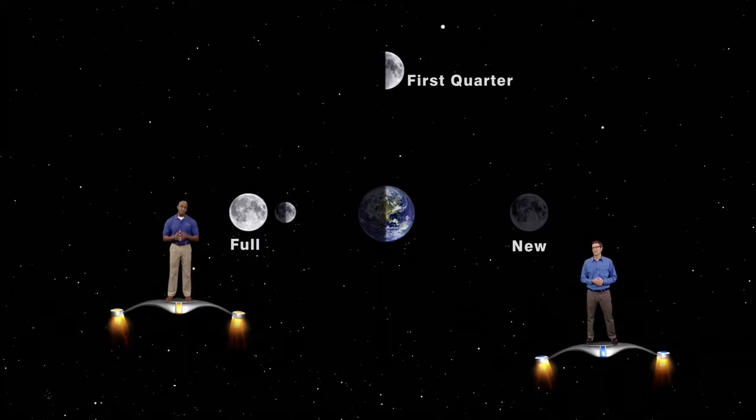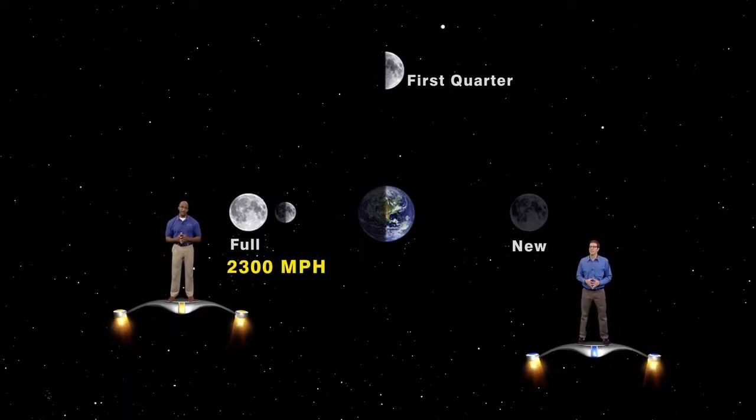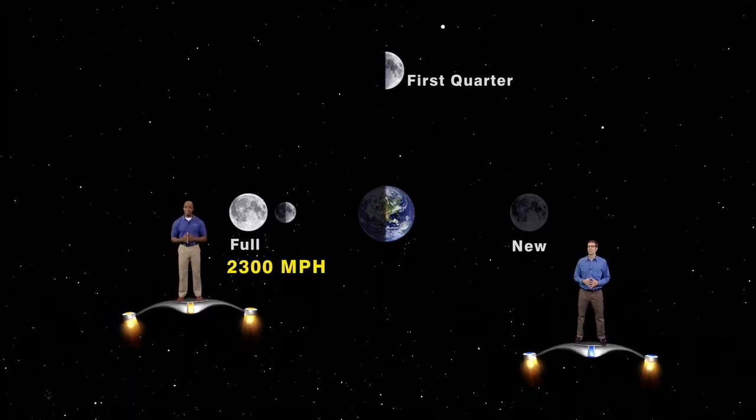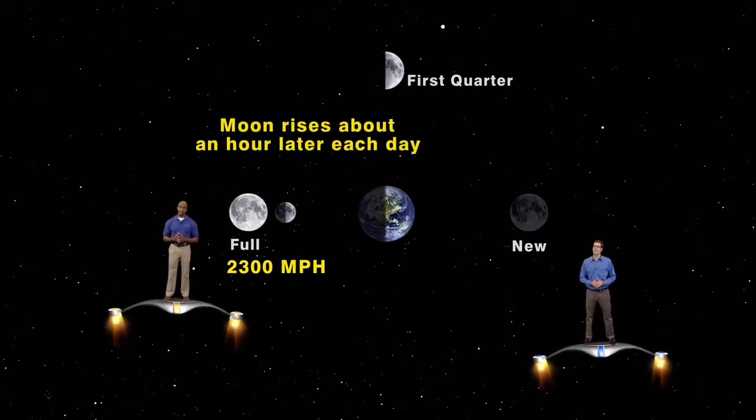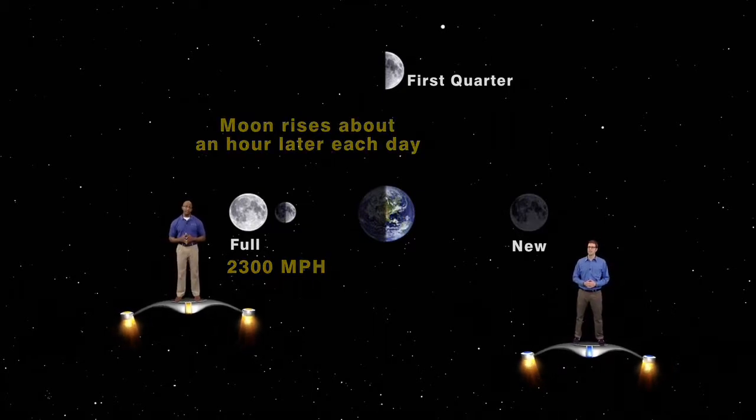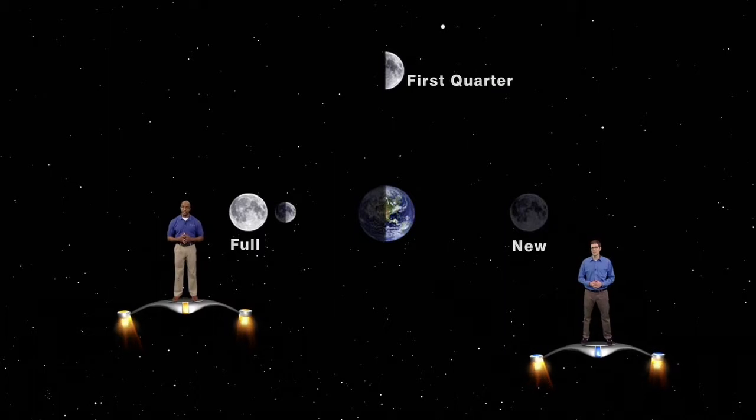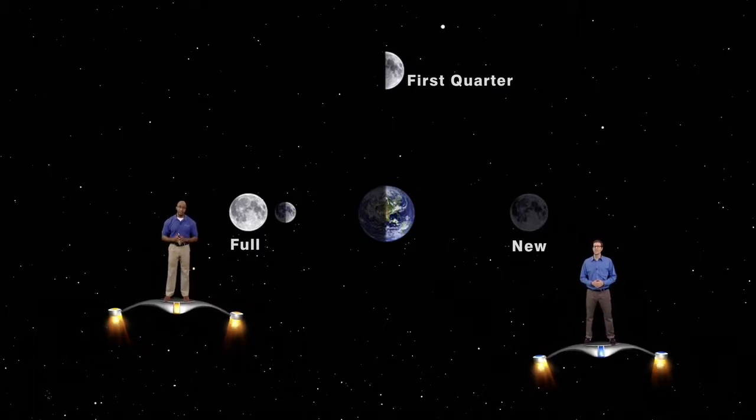That's right, Dean. The moon travels almost 2300 miles per hour in its orbit. This west to east movement of the moon causes the moon to rise almost an hour later each day. So, if the moon rises at 7pm when it's full, it will rise at almost 8pm the following evening.